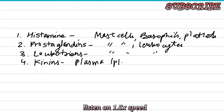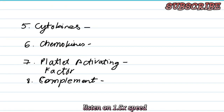The fourth mediator is kinins. Their source is plasma — specifically, plasma proteins called kinins which are produced in the liver.